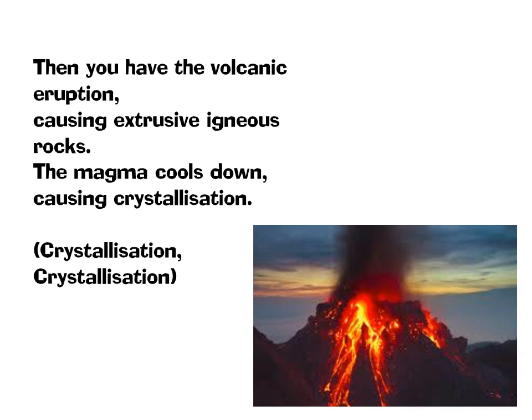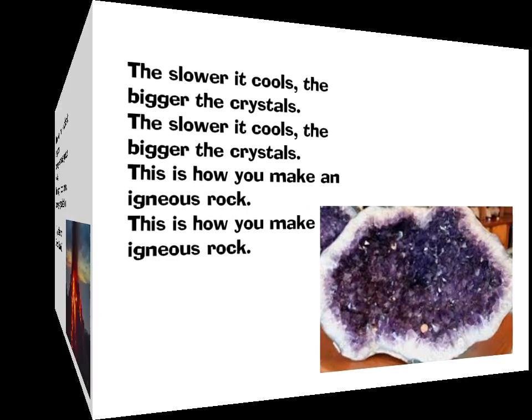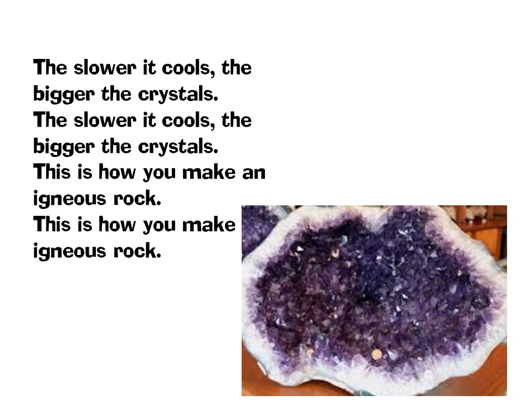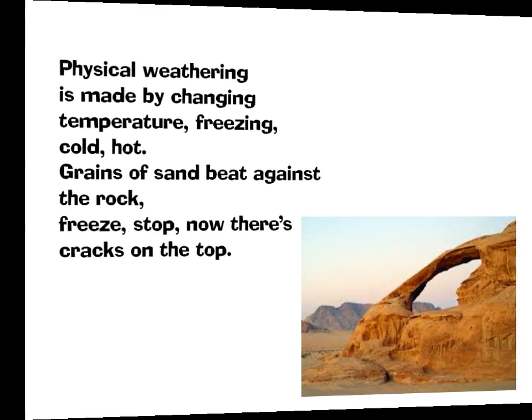Then you have the volcanic eruption causing extrusive igneous rocks. The magma cools down, causing crystallization. The slower it cools, the bigger the crystals. This is how you make an igneous rock.